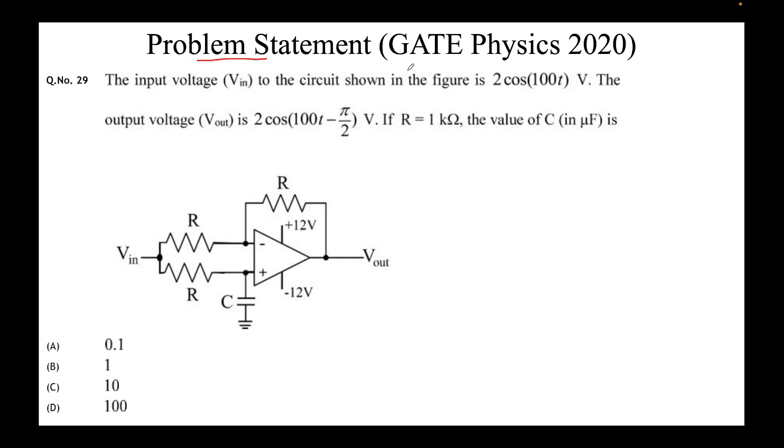The problem statement from Gate Physics 2020 reads as follows. The input voltage to the circuit shown in the figure is 2 cos 100t volts. The output voltage V_out is 2 cos(100t - π/2) volts.